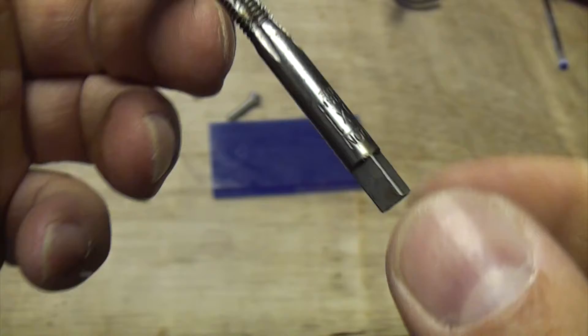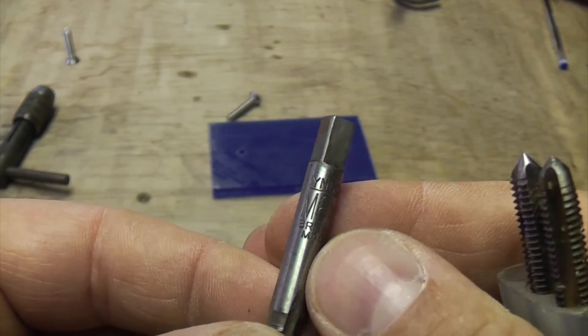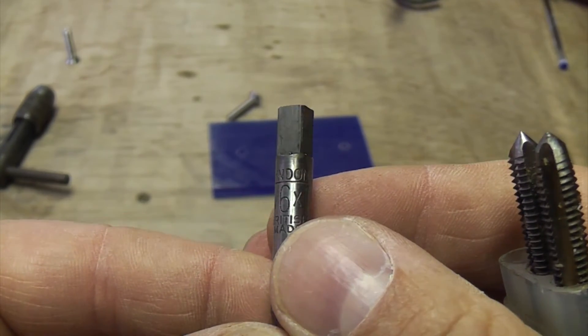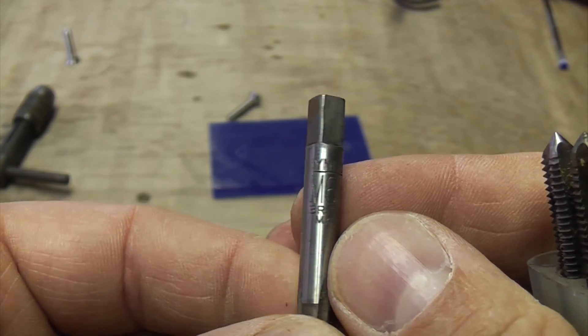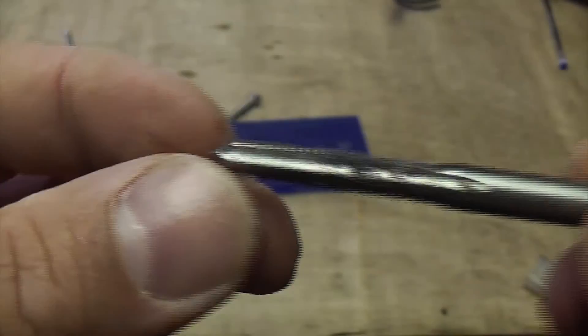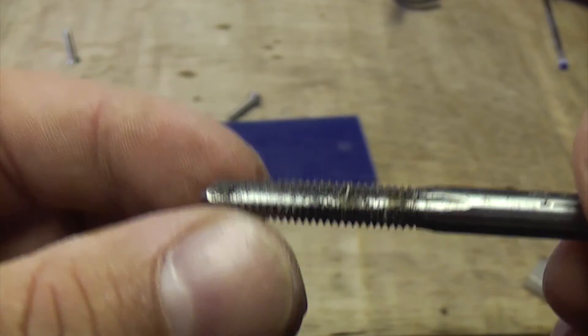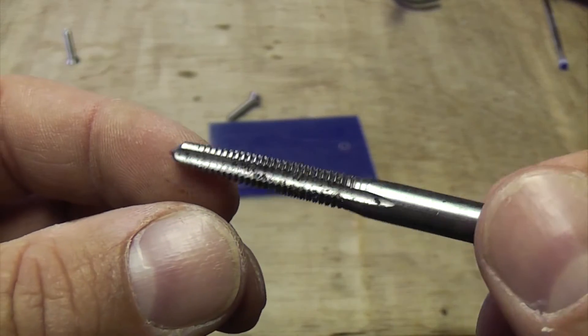Another thing about taps is they always have the information on the tap. You can see there that's an M6x1, which is what we're going to be using. So we're just going to put that in the tap wrench now and then we're going to tap a hole through the perspex.